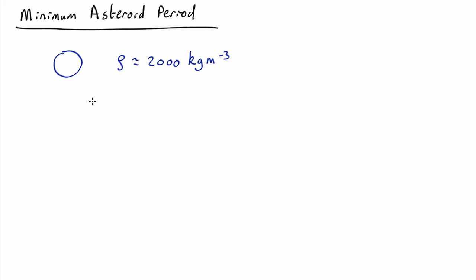Now we know in reference notes that the radius, the limiting radius, is equal to the cube root of g mass of the asteroid period squared over 4 pi squared.